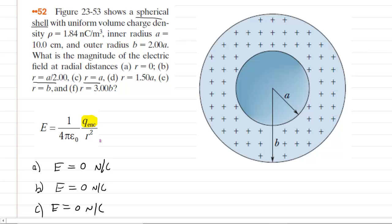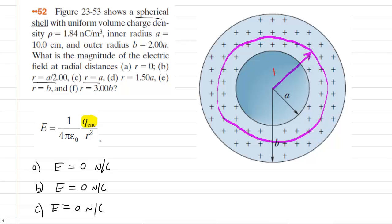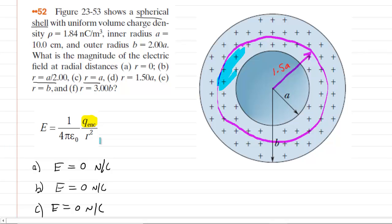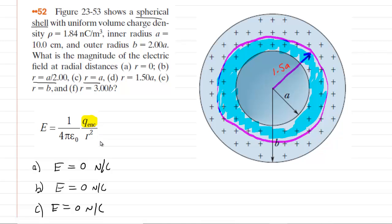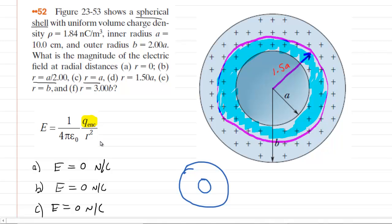Now in part D, things get more challenging because the location has a radius of 1.5a. You can imagine a spherical Gaussian surface of radius 1.5a drawn here. Inside that Gaussian surface outlined in magenta, you will see positive charges. It becomes our job to figure out how much positive charge is enclosed in this region colored in blue — essentially a donut-shaped structure.